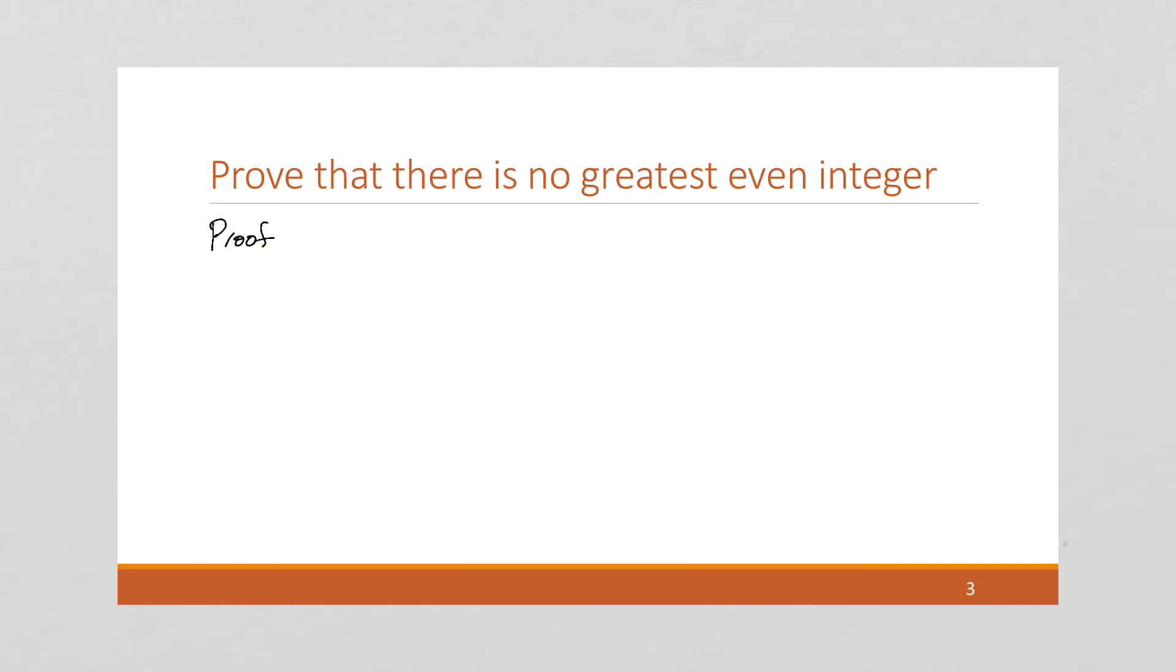First, we're going to do a proof by contradiction. All right, you always want to start by naming what type of proof you're going to do. I'm going to say suppose not. That is, suppose there is a greatest even integer.